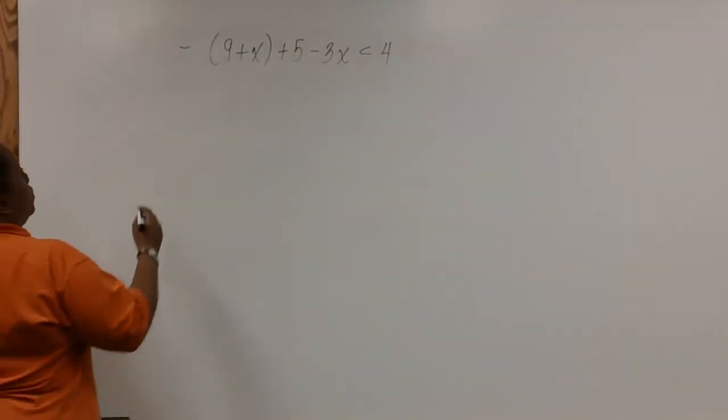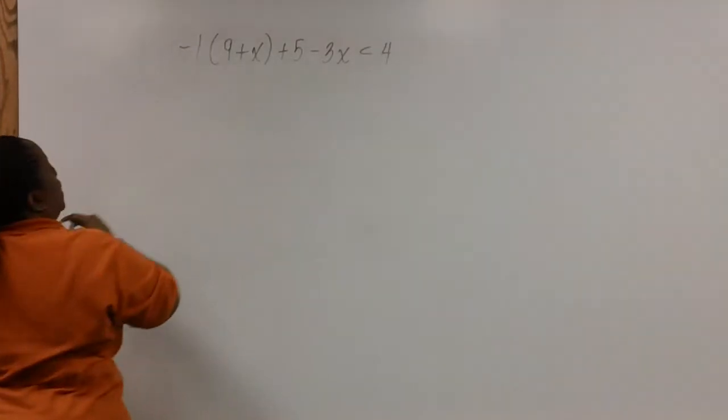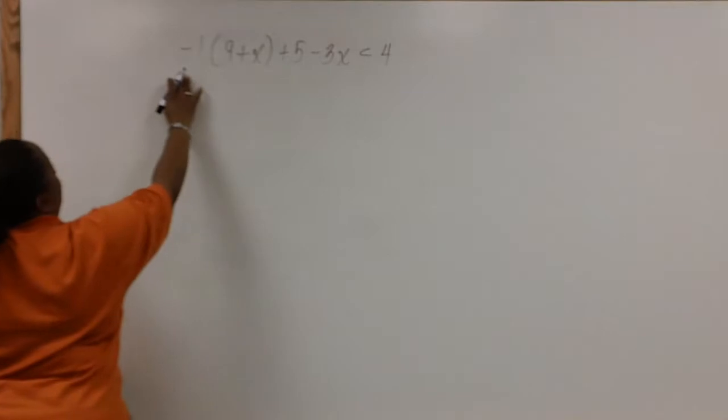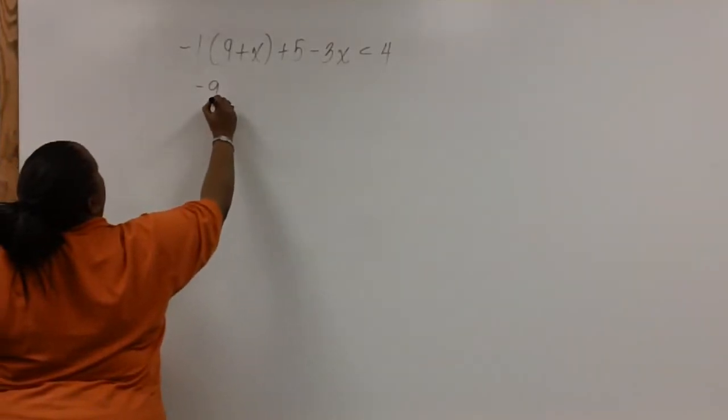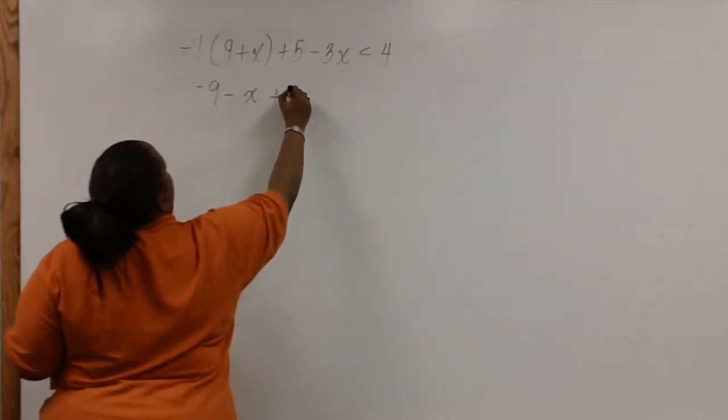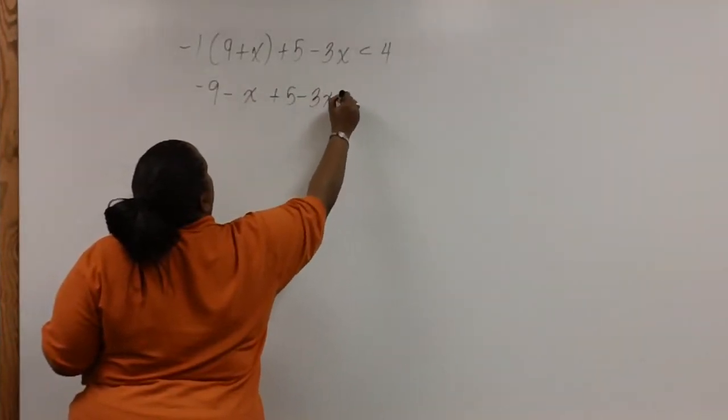If it helps you, you can write a negative 1 here. So distributing negative 1, we get negative 9 minus x plus 5 minus 3x less than 4.